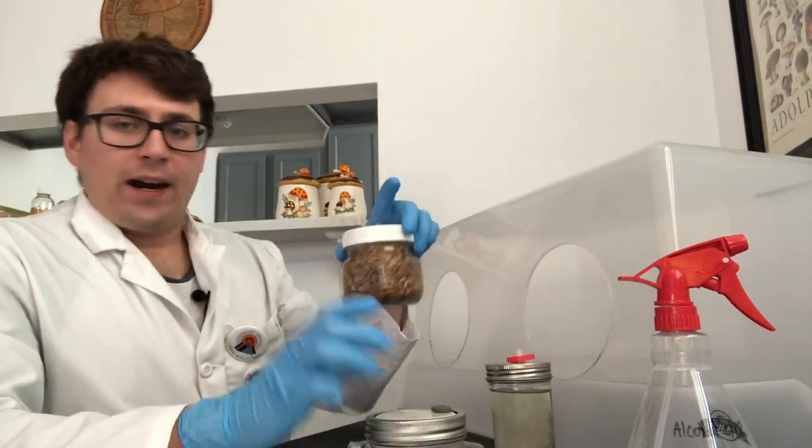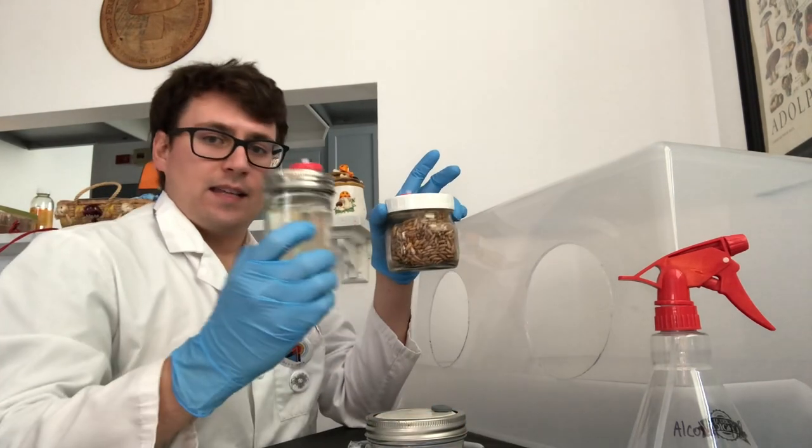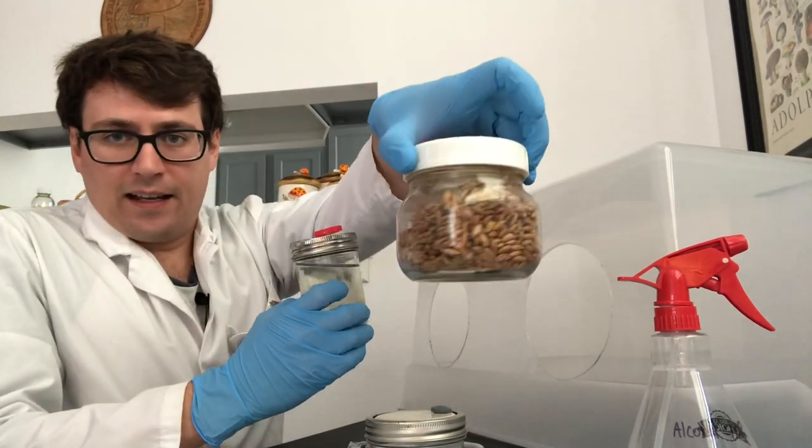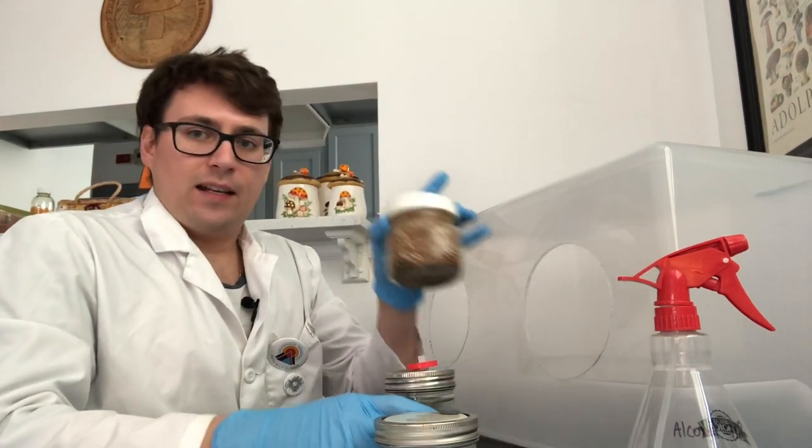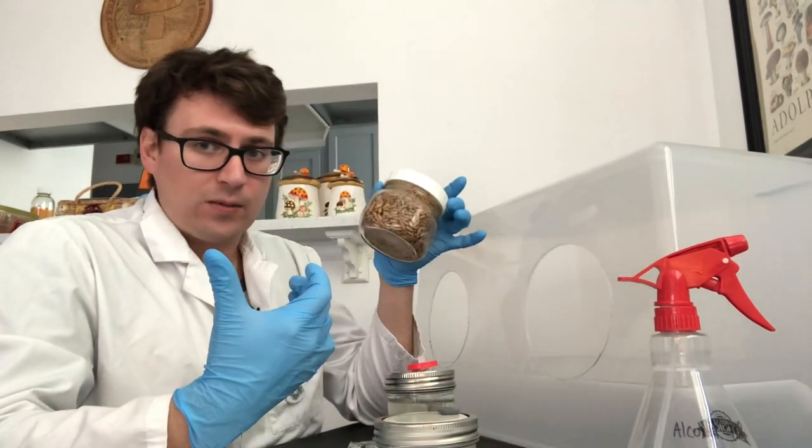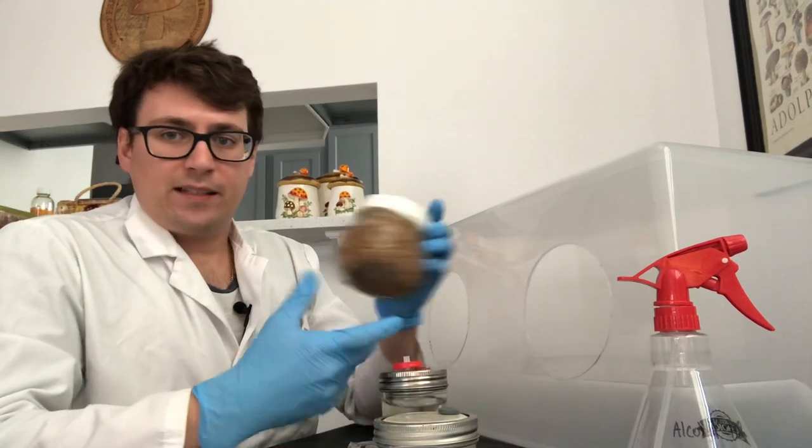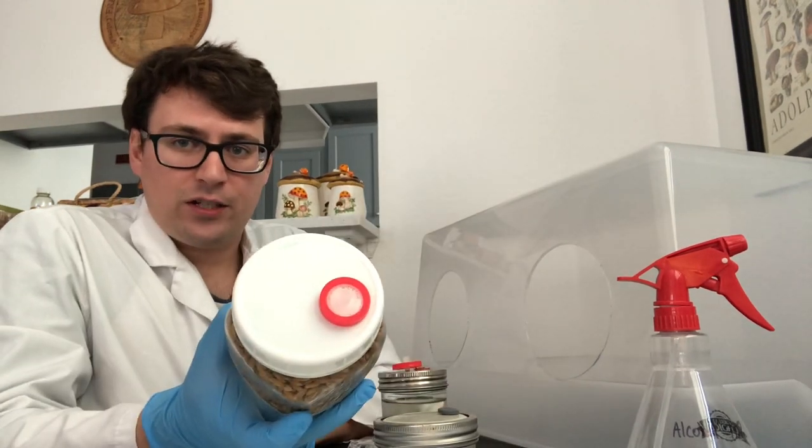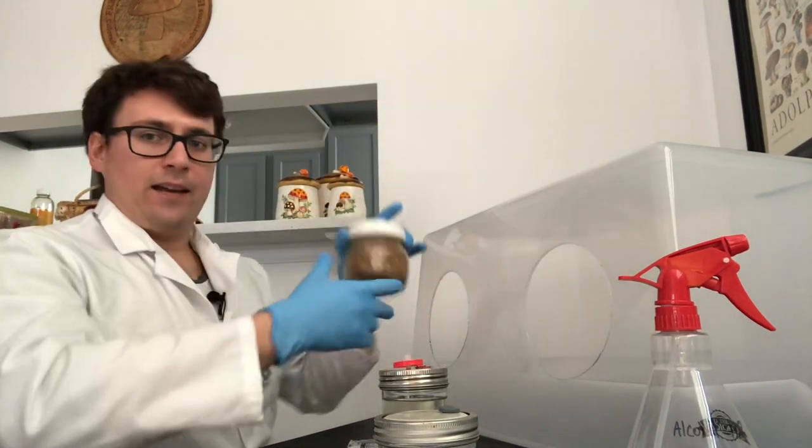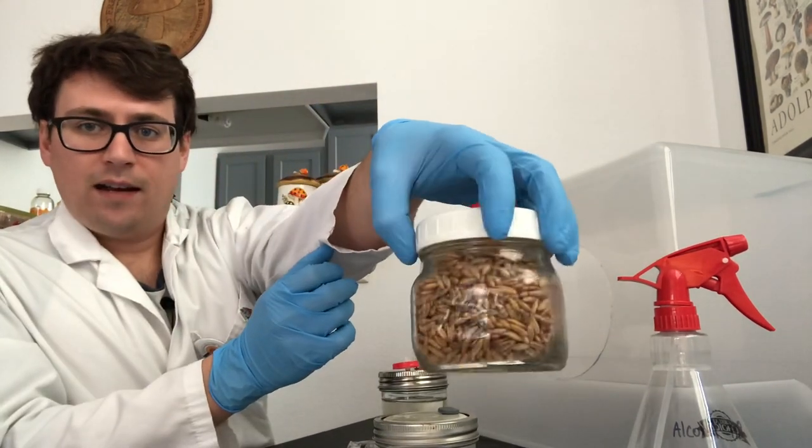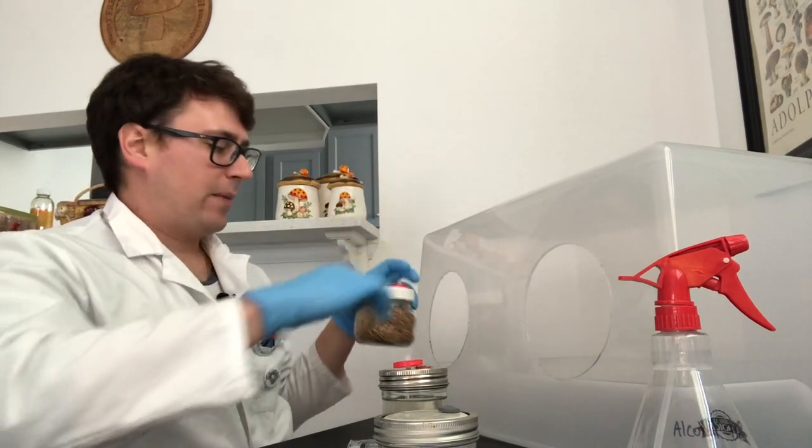Moving ahead from there, you could take your liquid culture and inoculate it into some sterilized grain, so you don't necessarily need a flow hood for that as well. But this lid doesn't have an injection port, so I'm going to demonstrate how I would inoculate a liquid culture into this grain using the still air box.